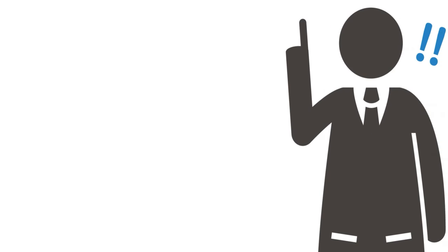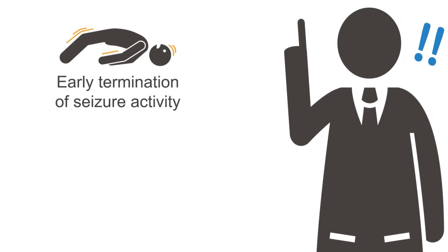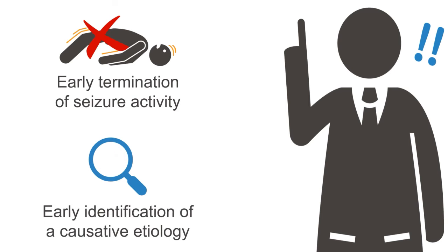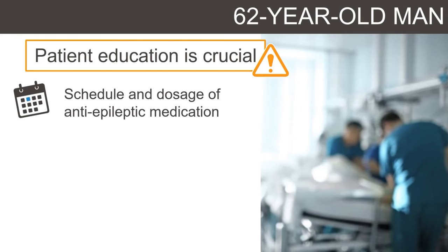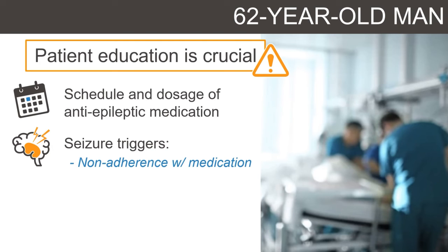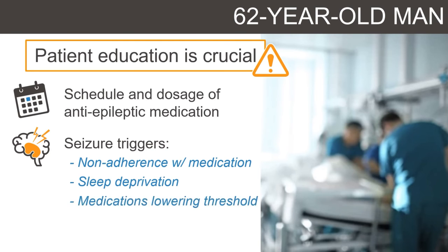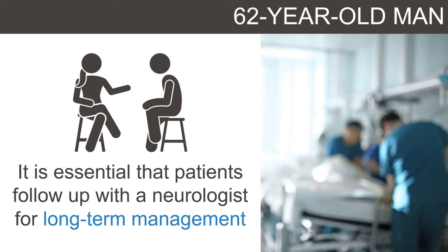In review, the successful management of status epilepticus includes both early termination of seizure activity as well as identification of a causative etiology. Before discharge from the hospital, patient education is crucial. Remind patients to adhere to the correct schedule and dosage of prescribed anti-epileptic medication. Patients, as well as their families or friends, should be educated on factors that may trigger seizures, including non-adherence with anti-seizure regimen, sleep deprivation, medications that may lower seizure threshold, illness including infections and metabolic abnormalities, and alcohol withdrawal. Recommendations for seizure precautions and restrictions should also be provided. After discharge, it is essential that patients follow up with a neurologist for long-term management.